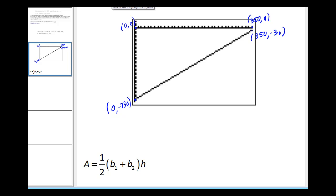Again, our goal is to find the area of this trapezoid, which represents the total revenue from the sale of the first 350 tickets.